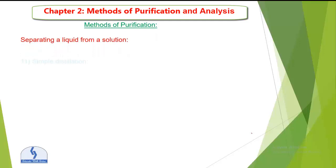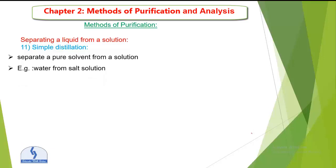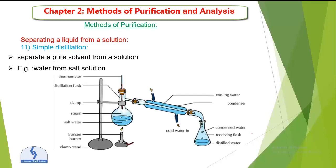The next method for separating a liquid from a solution is simple distillation. Simple distillation is used to separate a pure liquid (solvent) from a solution by boiling the liquid and condensing the vapors. Example: water from salt solution. Both simple distillation and fractional distillation involve boiling and condensation. The distillation flask is heated, steam travels through and is condensed back into liquid.